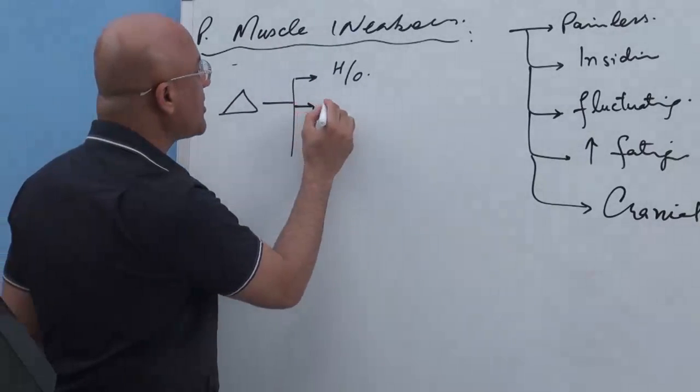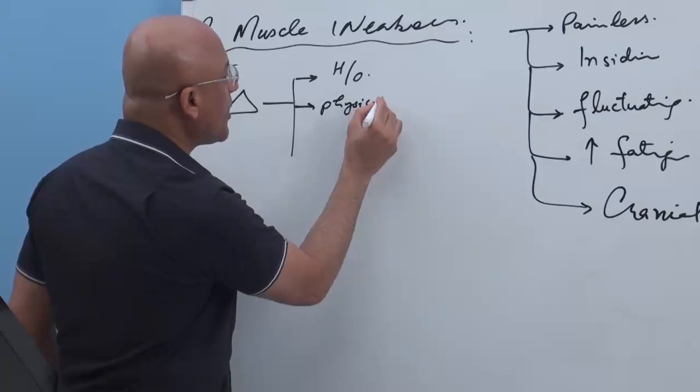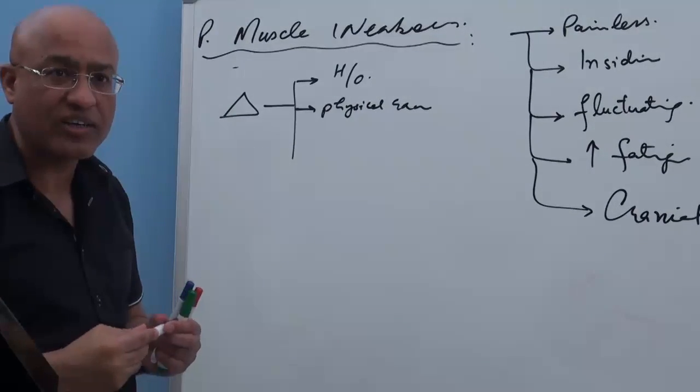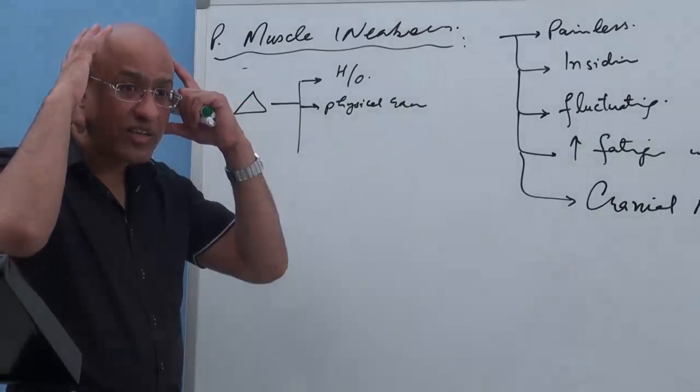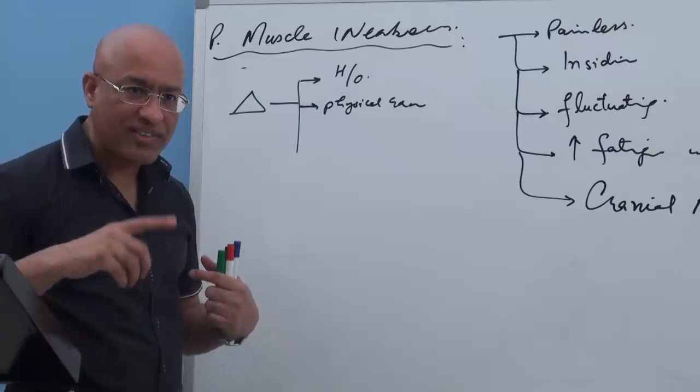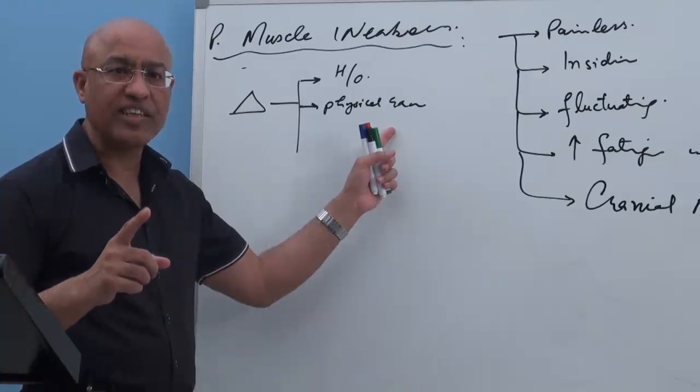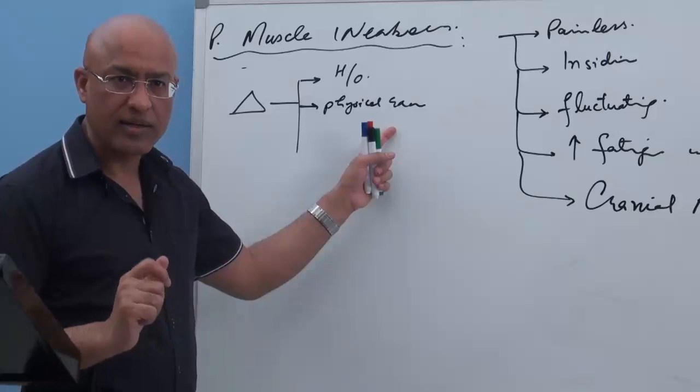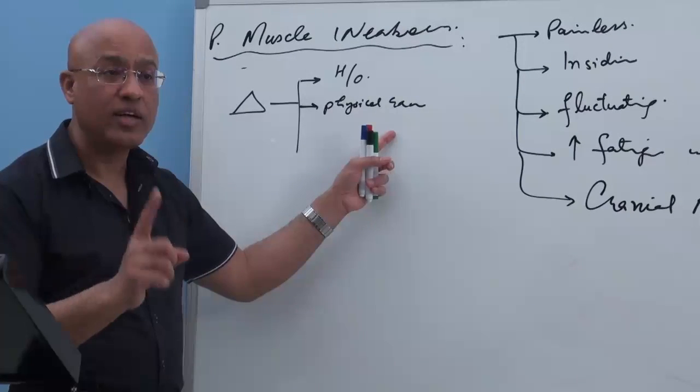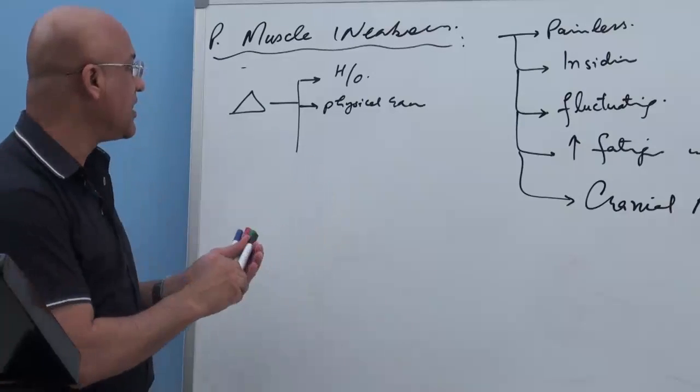Secondly, physical examination. When you study the neuromuscular system of this patient, usually weakness is more in cranial regions, but later on it may involve. In these patients, sensations are normal. Sensory system is normal. Deep tendon reflexes are normal.